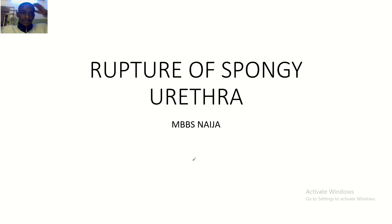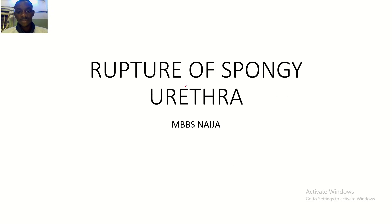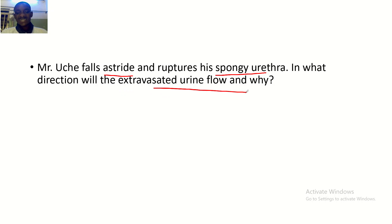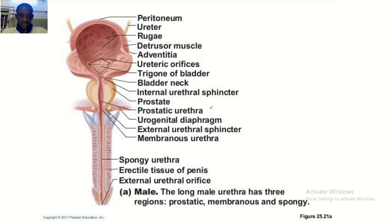Quick flip back to the pelvis and perineum. Today we'll be talking about the rupture of the spongy urethra. The question here is: Mr. Uche falls astride and ruptures his spongy urethra. In what direction will the extravasated urine flow, and why?